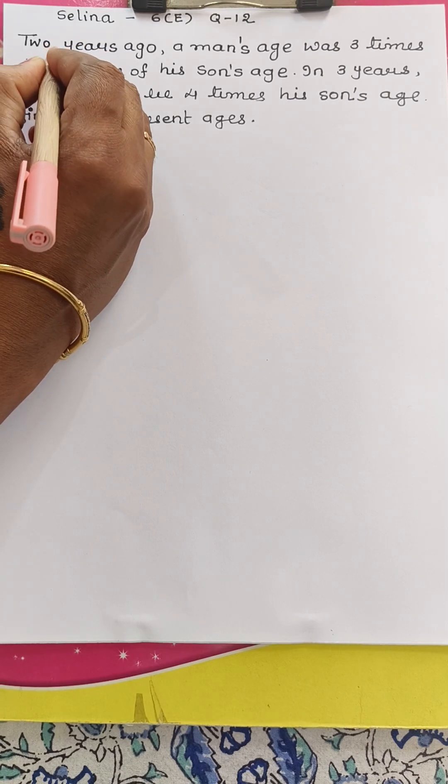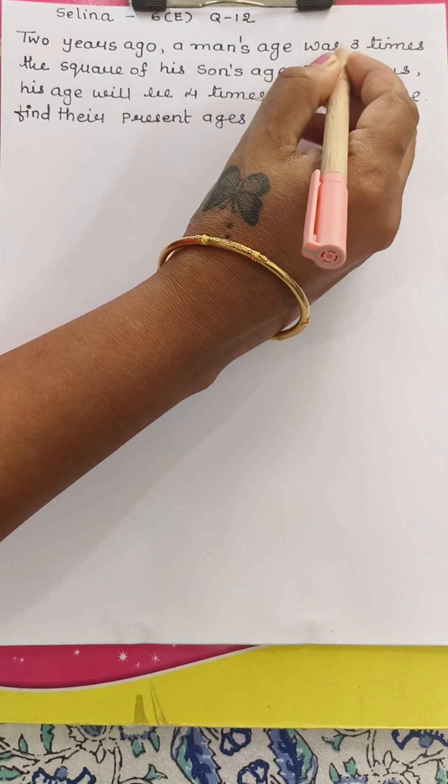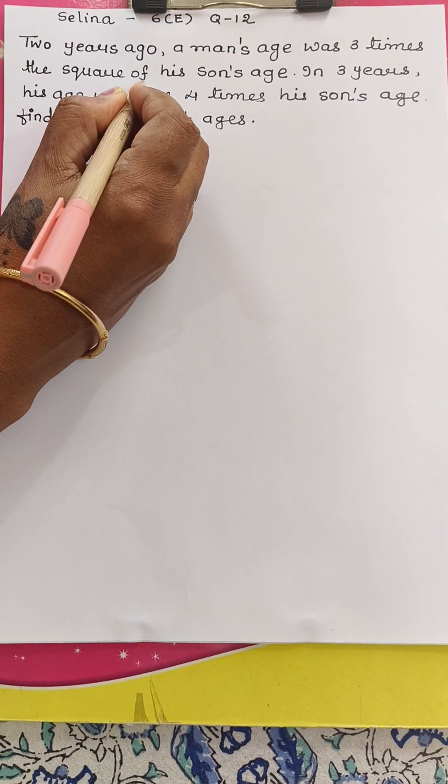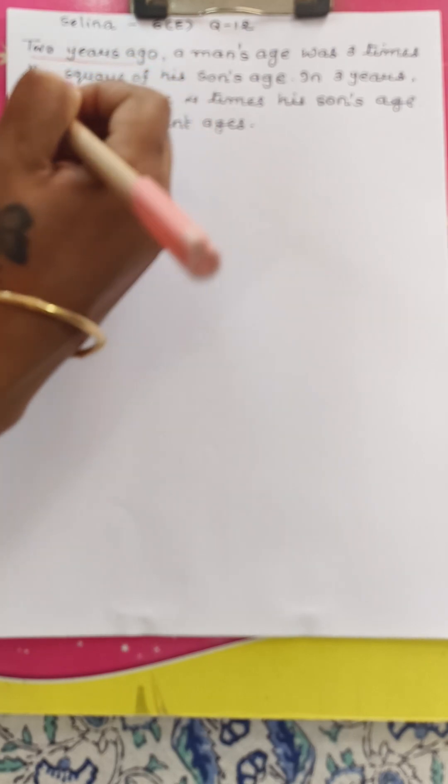Two years ago, a man's age was three times the square of his son's age. Two years ago. So here important keywords are two years ago.